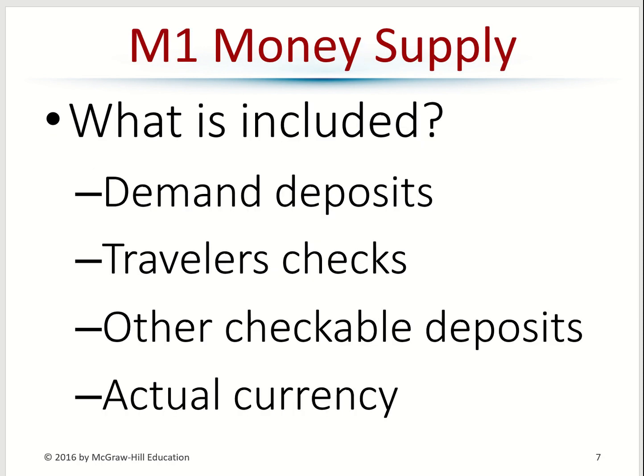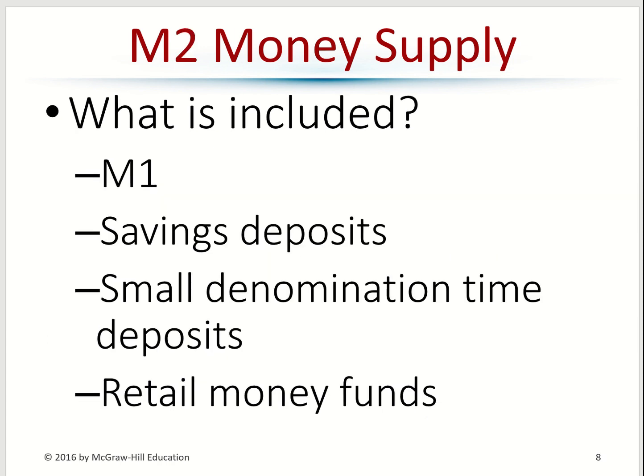M1 includes demand deposits — that's your checking account — traveler's checks, other checkable deposits, and actual currency. These are very liquid. M2 is everything in M1, plus your savings deposit, small denomination time deposits, and retail money market funds.